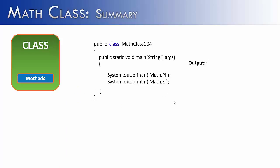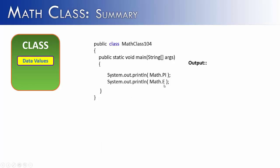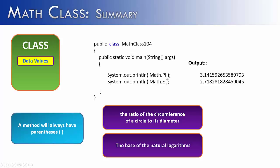Methods aren't the only part of the Math class — there are also data values, which is what PI and E are. The important things to know about data values are their purpose and their name. Notice that PI is capital P, capital I, and E is just capital E. You can't use lowercase. The purpose of PI is the ratio of the circumference of a circle to its diameter. E is Euler's number, the base of natural logarithms. These look like 3.14159... and 2.71828... You can recognize attributes versus methods because a method always has parentheses — PI and E have no parentheses, so they are fields, not doers.